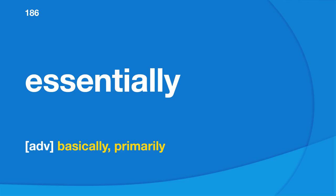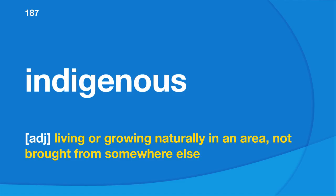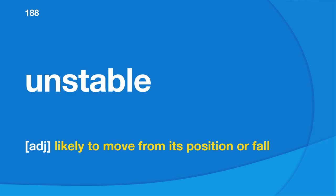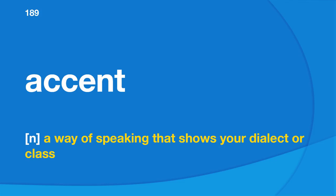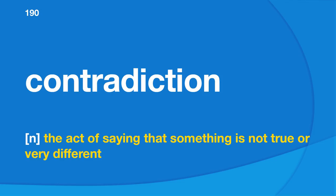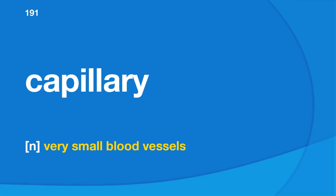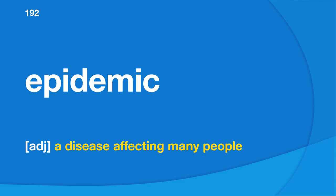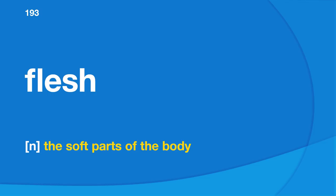Indigenous: living or growing naturally in an area, not brought from somewhere else. Unstable: likely to move from its position or fall. Accent: a way of speaking that shows your dialect or class. Contradiction: the act of saying that something is not true or very different. Capillary: very small blood vessels. Epidemic: a disease affecting many people. Flesh: the soft parts of the body. Intensity: great energy, strength, or concentration.